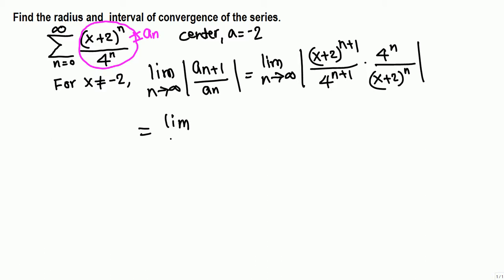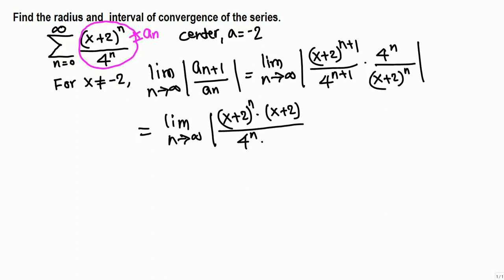Let's continue simplifying. For (x+2)^(n+1) we have (x+2)^n, so let's write this as a product: (x+2)^n times (x+2)^1. Similarly, 4^(n+1) is 4^n times 4^1.